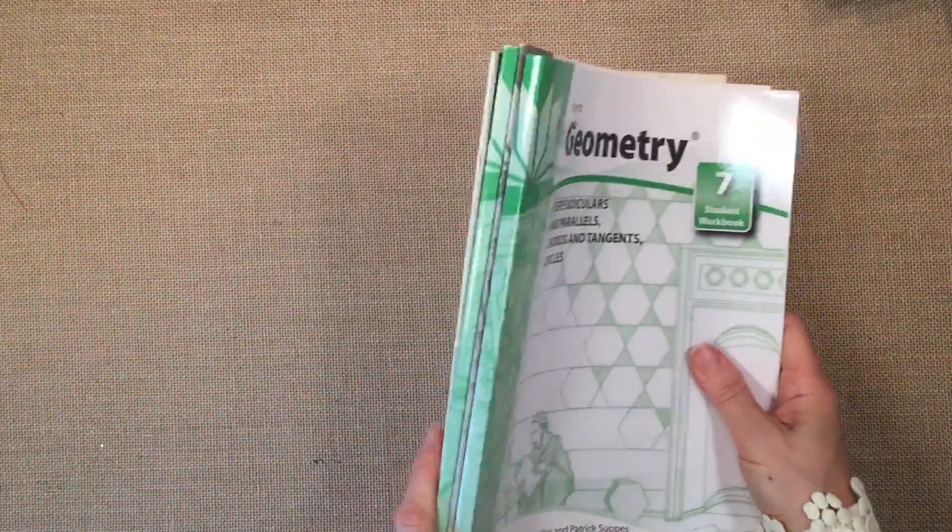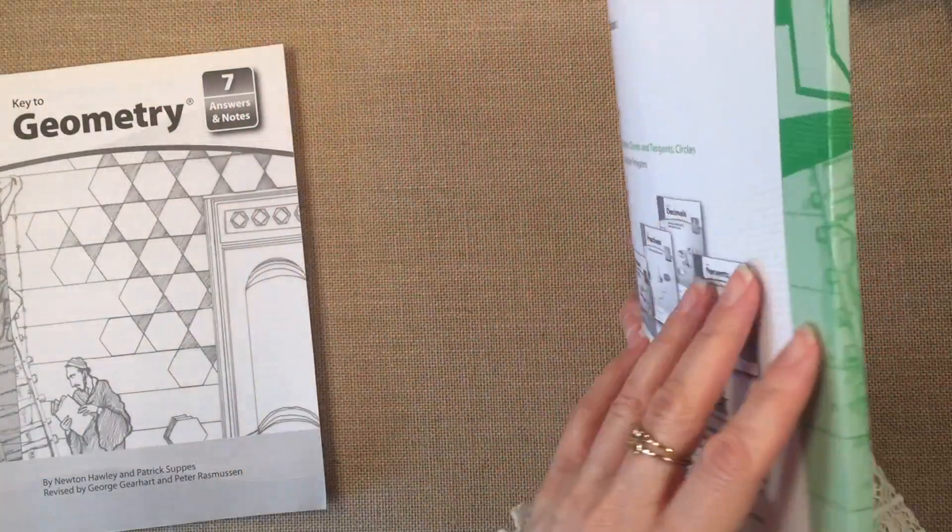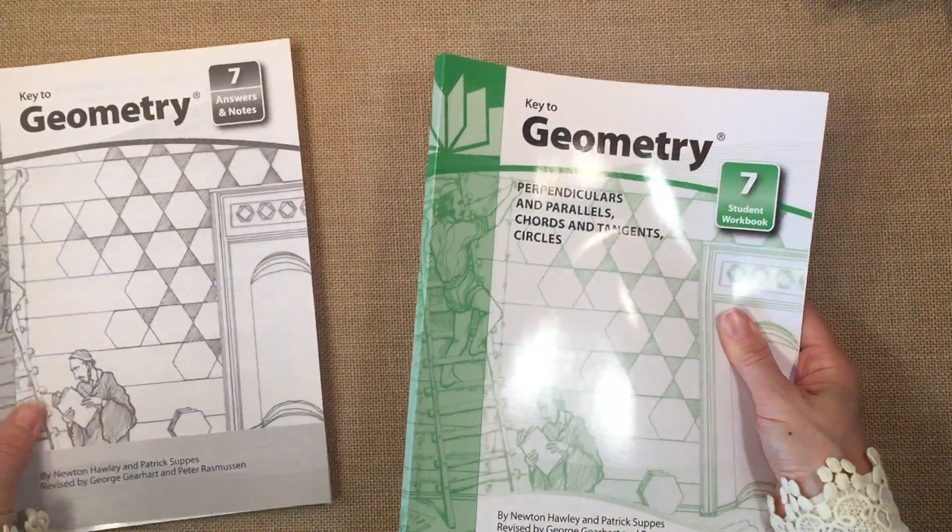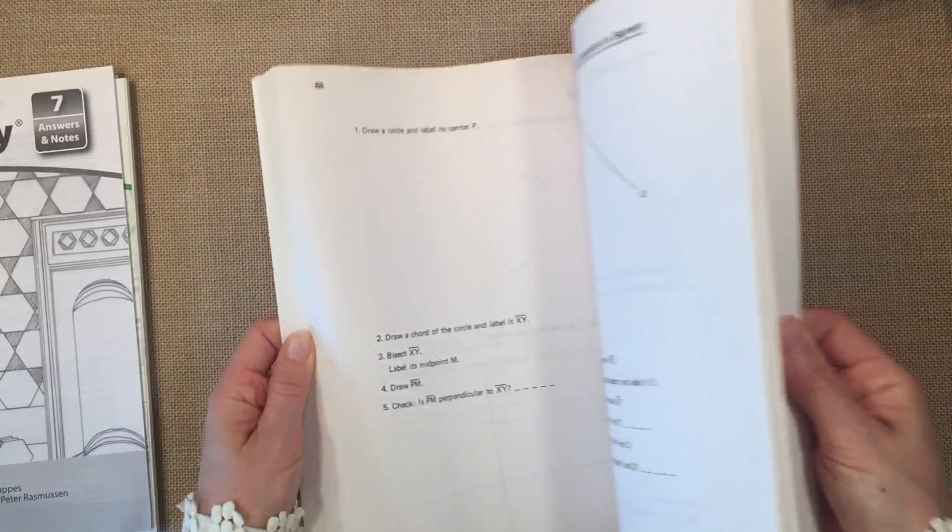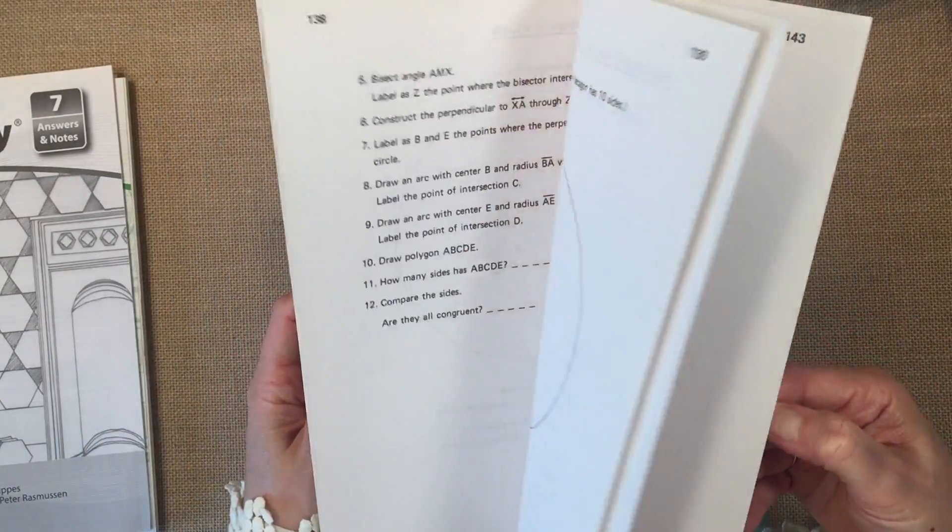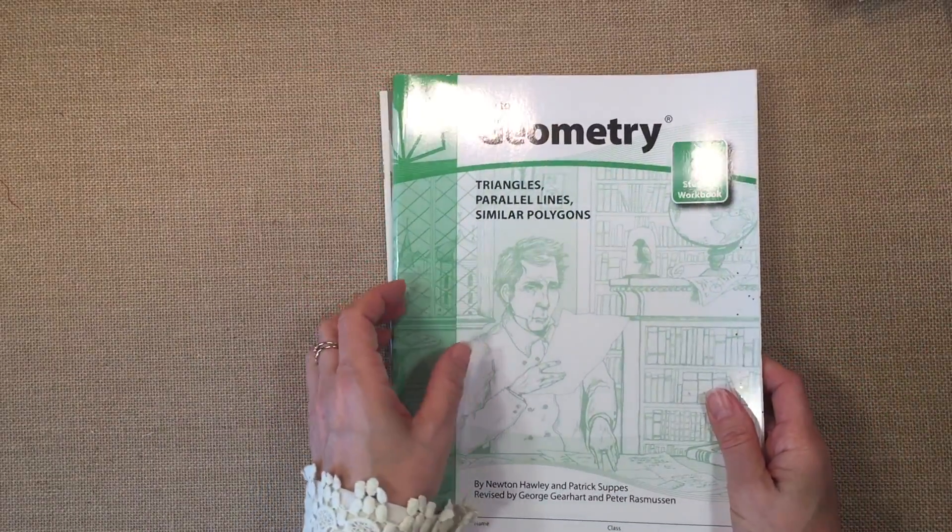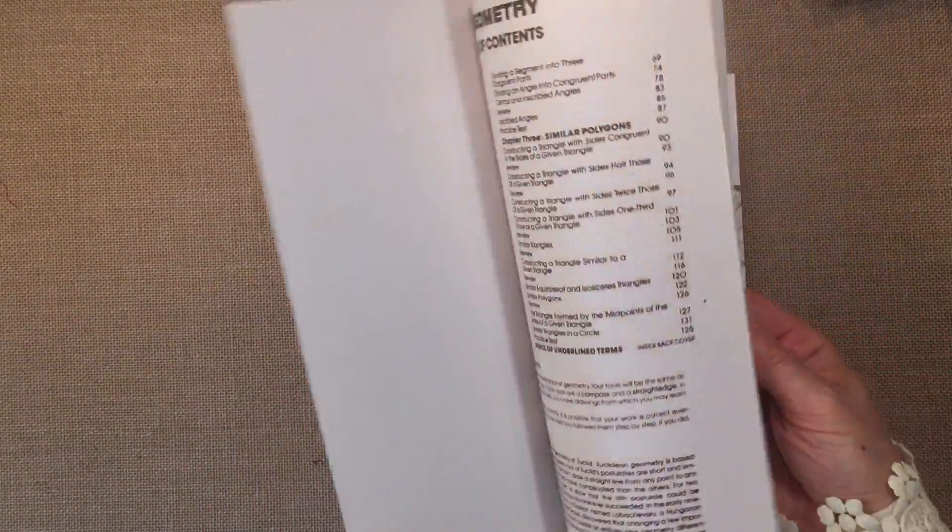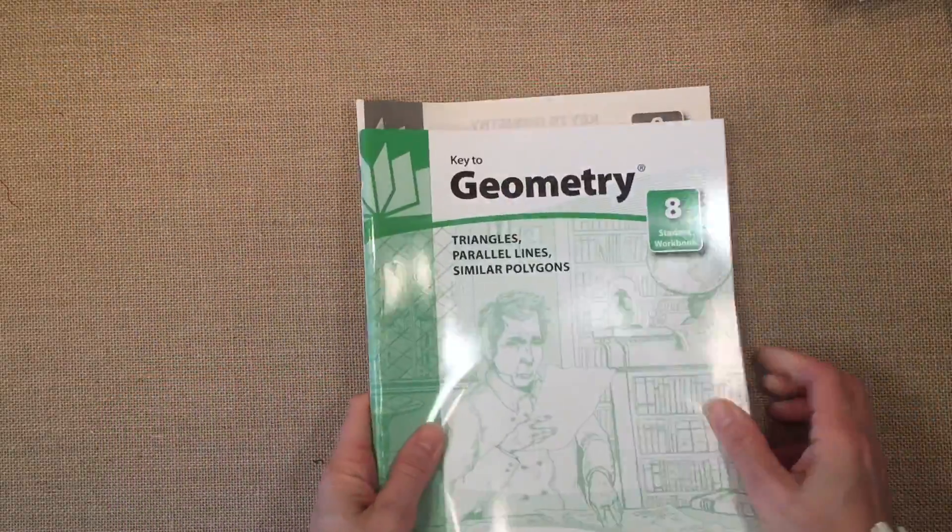And then there are two more workbooks here. And these ones are bound differently. The covers are thicker covers, and they're glue bound. They're not staple bound. And this one has far more pages. It has almost 160 pages. And then number eight is triangles, parallel lines, and similar polygons. And this one again has a lot more pages. There are no tests at the back of this book. And then there's the answer key for number eight.